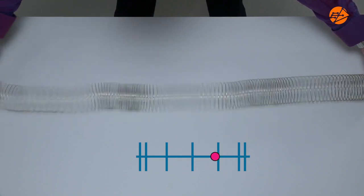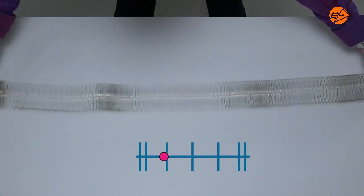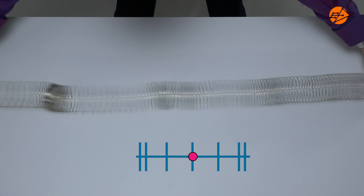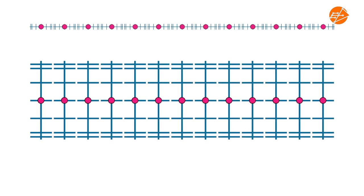We will visualize the movement of 13 individual particles in the wave using these representations. Here, they are shown to be at equilibrium position, which is at rest. These are the positions of the particles at t equal to 0 second. Let's plot the displacement-distance graph. Note that distance is defined as the length of the particle from the source of disturbance to the equilibrium positions of the particles.